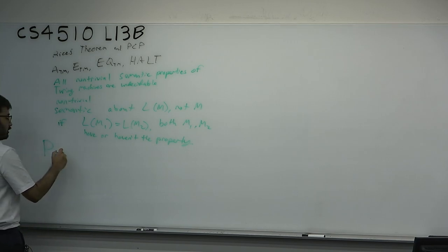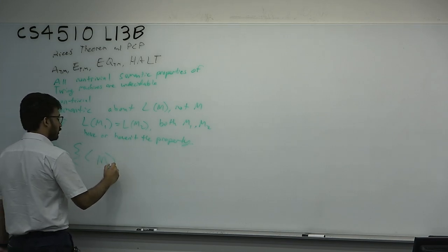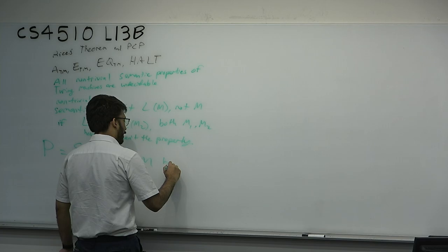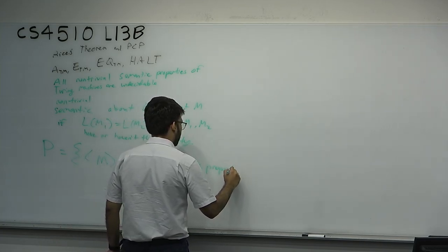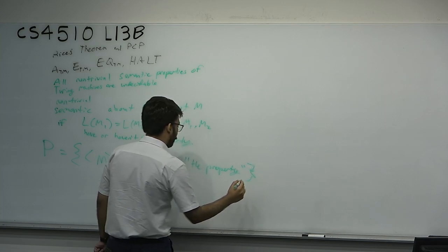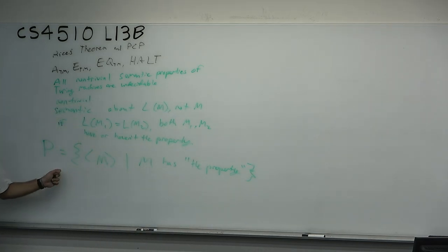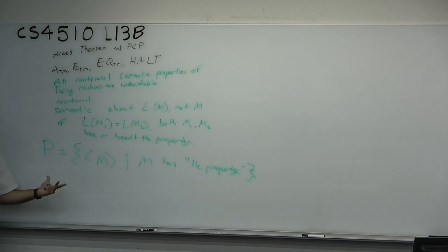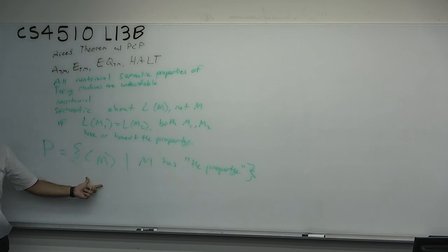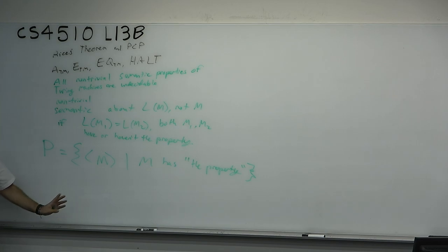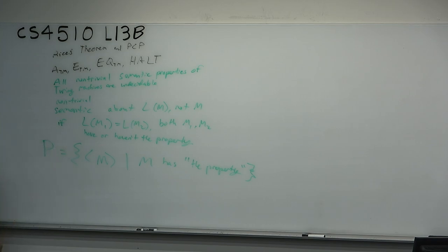Rice's theorem is really about recognizable languages, but we can only talk about them through finite descriptions — the Turing machine encoding. What we need to prove is: P is a language of machine encodings such that M has the property. I claim for any P such that the property is both non-trivial and semantic, P is undecidable. There is a little data structures fiddling because ETM is the only language we've proven consisting purely of machine encodings. ATM and HALT are machine-and-word pairs, EQTM is pairs of machines — but these are all certainly semantic non-trivial properties.